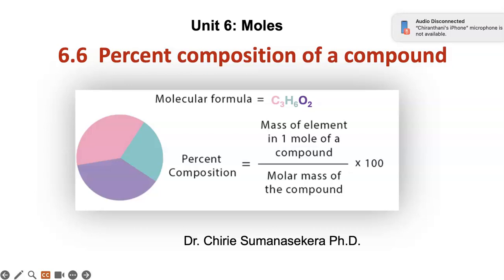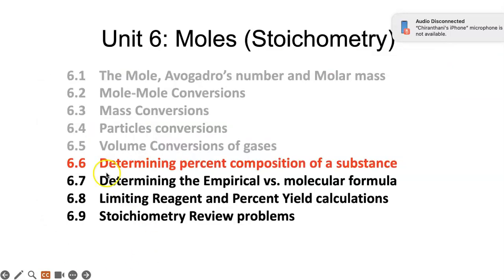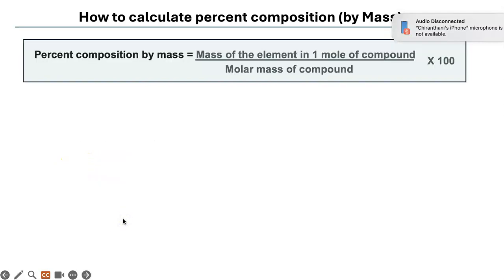Hello, this is 6.6 percent composition of a compound. Today we are going to learn how to calculate how much in percentage grams you have of each element in a molar mass of a given compound. Here is the equation that you will use to do the calculation.